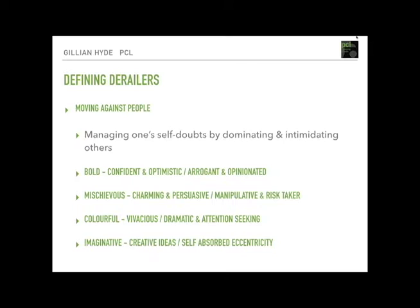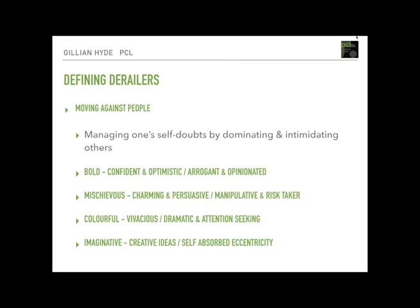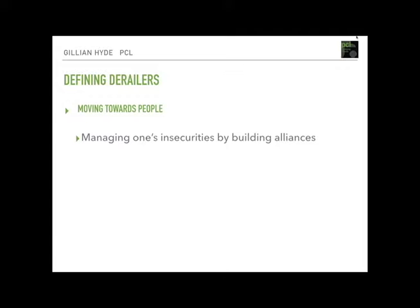The final cluster is 'moving towards people,' characterised by managing insecurities through conforming, complying, and building alliances. The diligent scale: organised and attentive to detail, but overly fussy and critical of others who don't meet their high standards, and reluctant to delegate. The dutiful scale: a good team player and agreeable, but their fear of disagreeing with people can lead to seeming rather indecisive and dependent.